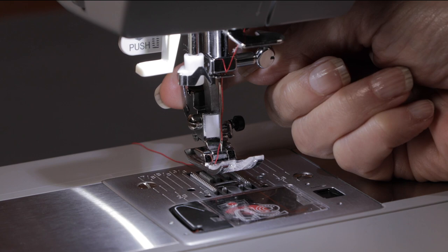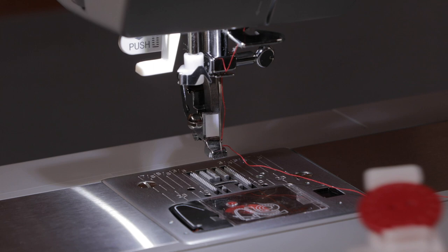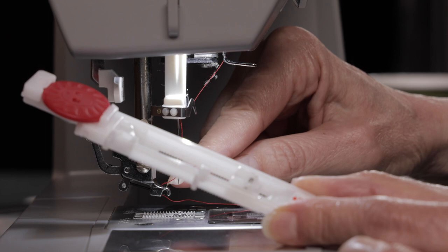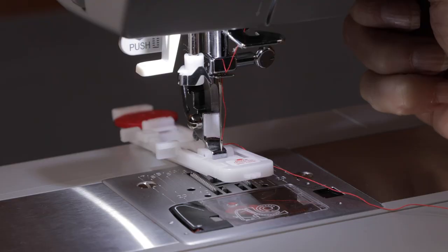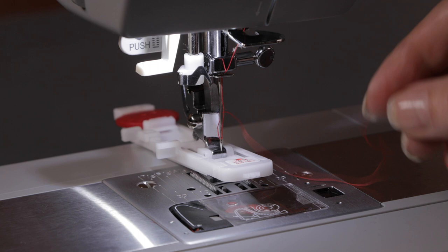Press the foot release lever at the back of the presser foot to release the foot that's already on the machine and we're going to line up the presser foot pin of the buttonhole foot underneath this part of the presser foot holder and lower the presser foot holder to snap the foot in place.